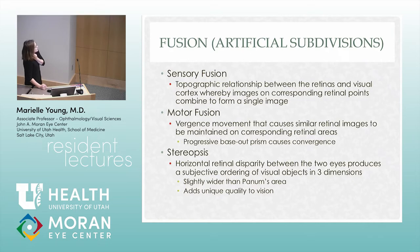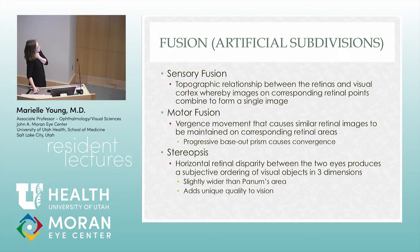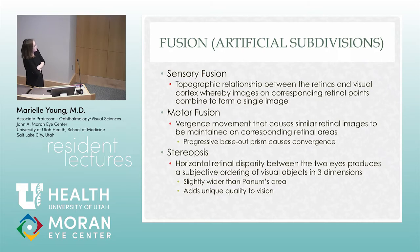These are artificial subdivisions discussed in the textbooks. Sensory fusion is the topographical relationship between the retinas — where images on corresponding retinal parts combine for a single image, meaning when you're lined up perfectly. Motor fusion is what your eyes do to attain fusion — what you see when you put a prism in front of the eye and the eyes fuse to pull the image together.